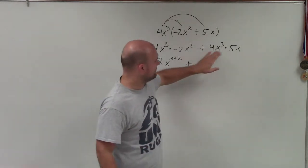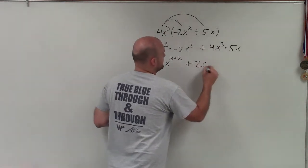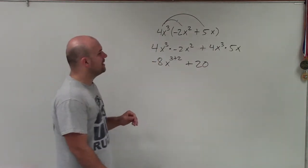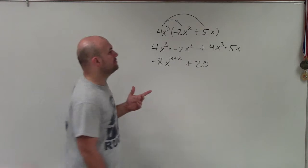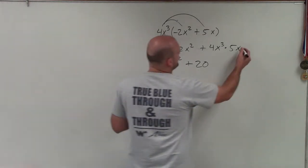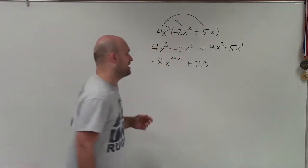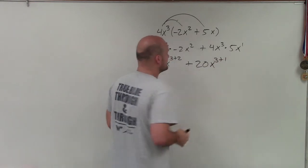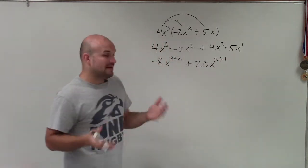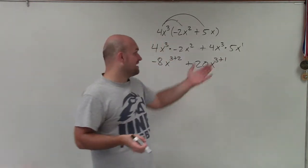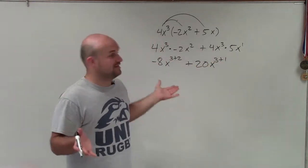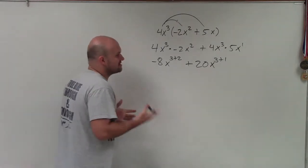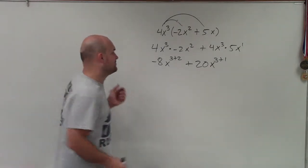Here we multiply 4 times 5, which is 20. And then x cubed times x — that x really has an exponent of 1, so when I combine those, that's 3 plus 1. Remember, the bases have to be the same. If it were a y or something, we'd leave it as x cubed times y. But since they have the same base of x, we can add their exponents.